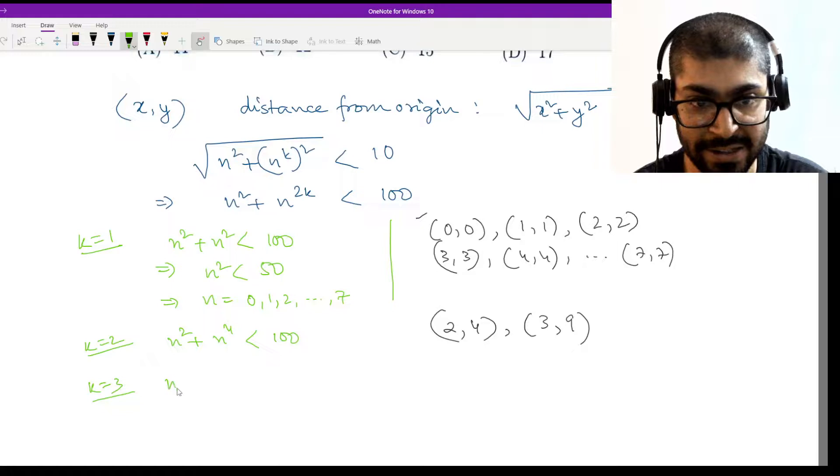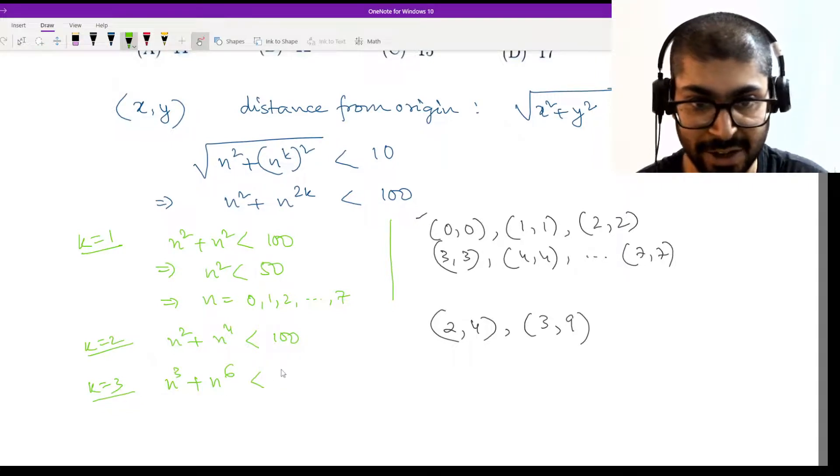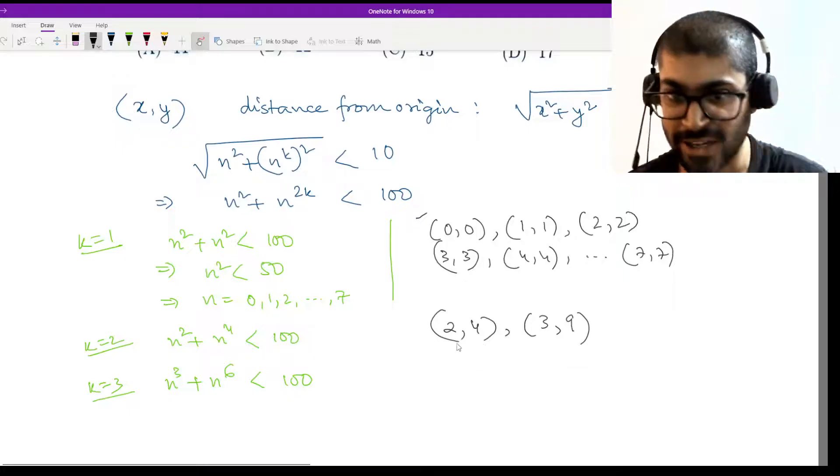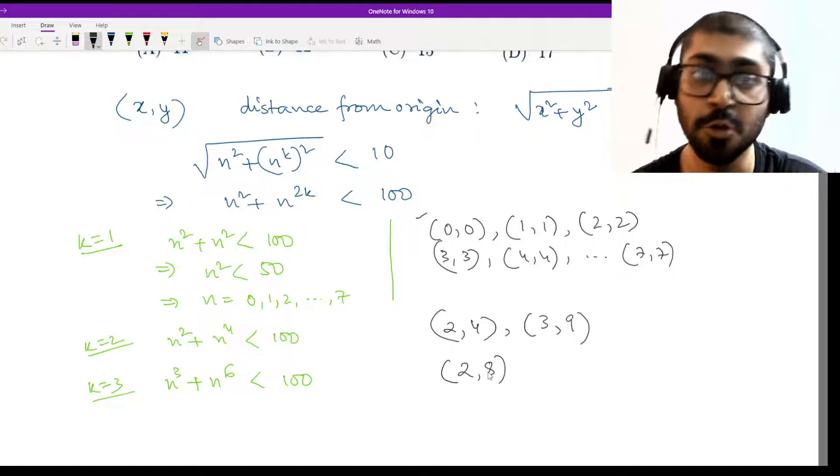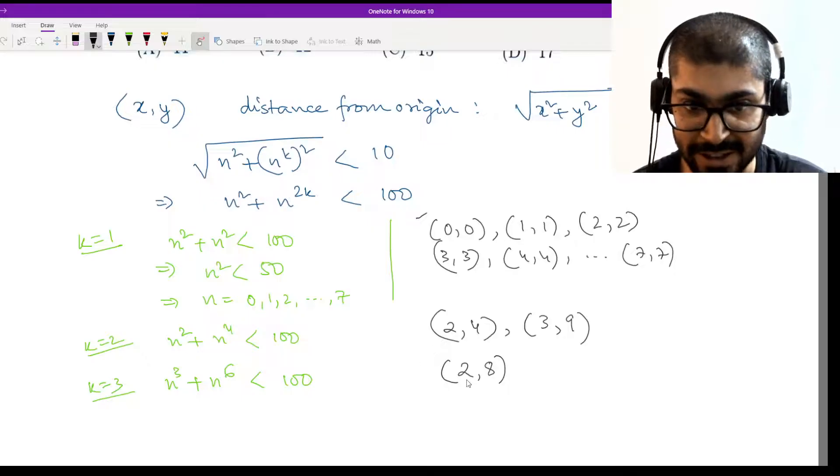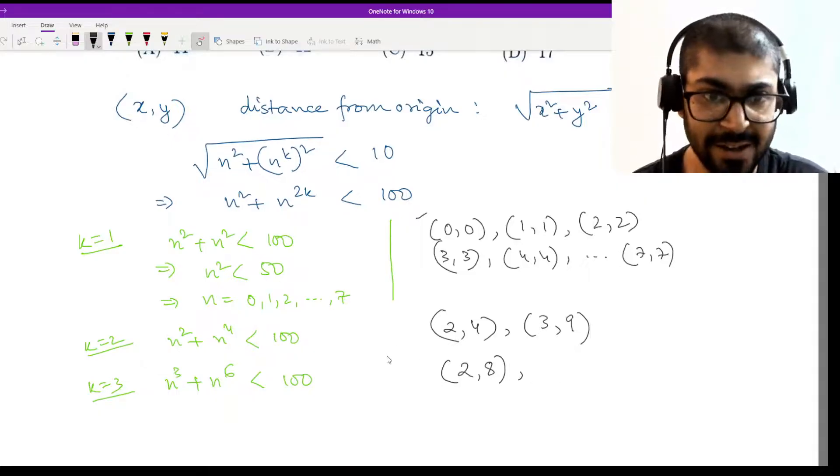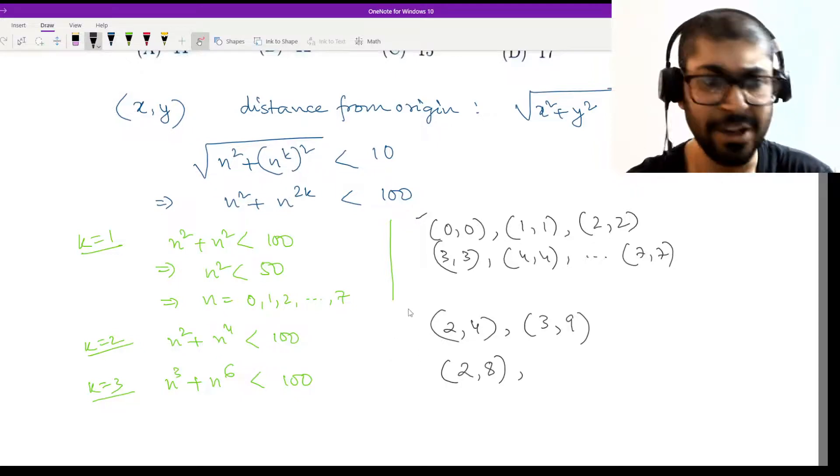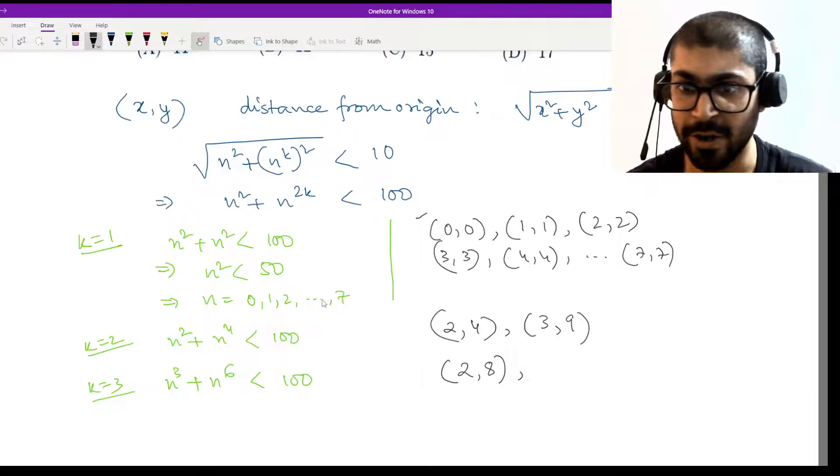Then we will take one more case k equal to 3. For n² + n^6, again zero and one are already there. Let's try for 2, so this will be (2,8) because 2³ is 8. Does this work? 2^6 is 64 plus 4 is 68, it works. What about 3? 3^6 becomes 9³ which is 729, so we won't have any more points.